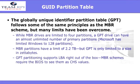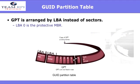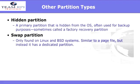The GPT, or GUID partition table, follows some of the same principles as the master boot record, but many of the limitations have been overcome. For instance, with master boot record drives you're limited to only four partitions. A GPT drive can have an almost unlimited number of partitions; however, Microsoft has limited Windows to 128 partitions — still not bad. The GPT is arranged by LBA instead of sectors. LBA 0 is identified as the protective MBR. You can also have hidden partitions. A lot of computer manufacturers will use hidden partitions for a recovery sector, or a swap partition, which you'll generally find on Linux or BSD systems, similar to a page file in Windows.